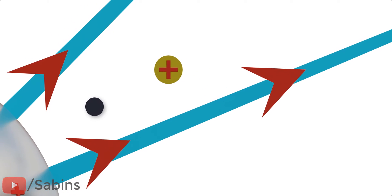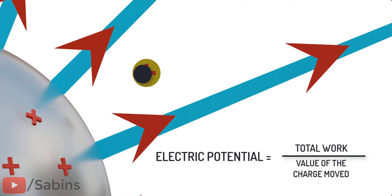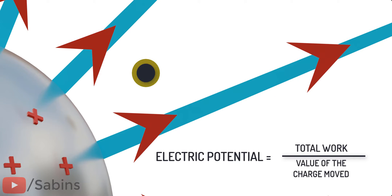To ascertain the total work, we have to add all these work values together. Then, if you divide the total work value with the value of charge, you will get electric potential at the point.